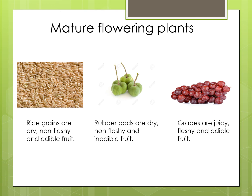Rice grains are dry, non-fleshy and edible fruit. Rubber pods are dry, non-fleshy and inedible fruit. Inedible means they are not able to be eaten; they are used in different ways. The third example is grapes. Grapes are juicy, fleshy and edible fruit.